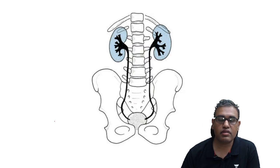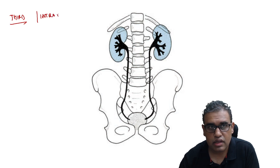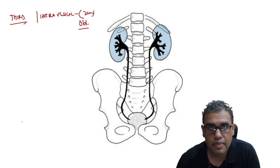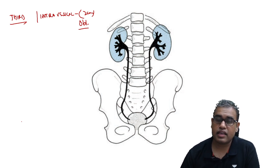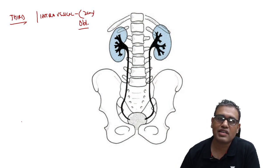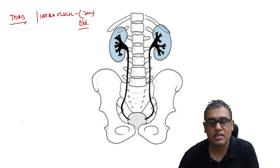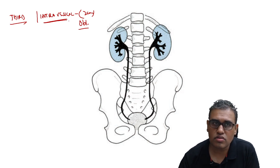The third part is the intravesical part — inside the bladder. It is approximately two centimeters long. This length is important: when we urinate, the detrusor muscle contracts, and to prevent reflux of urine back into the ureter — since there is no sphincter mechanism here as in the esophagus — the two-centimeter intravesical segment is compressed by the contracting detrusor muscle, closing the opening. So the third part has no external relations; it is surrounded only by bladder muscle.